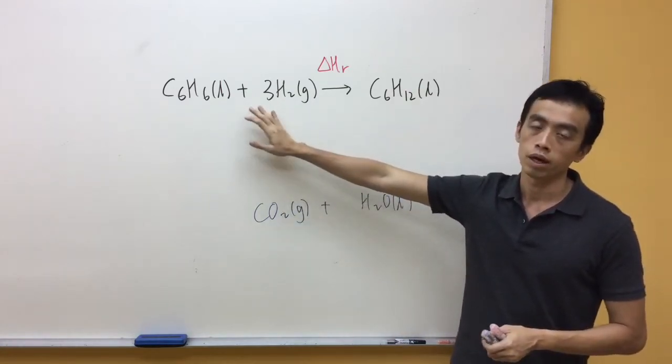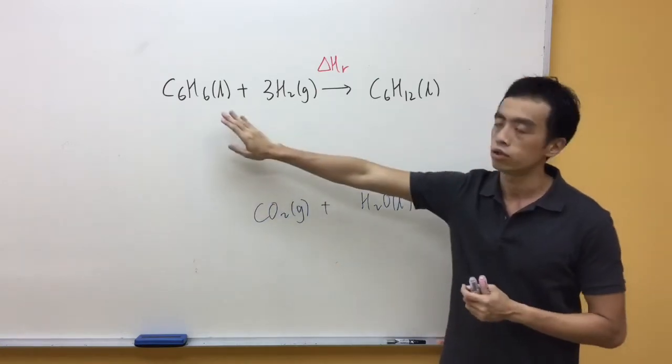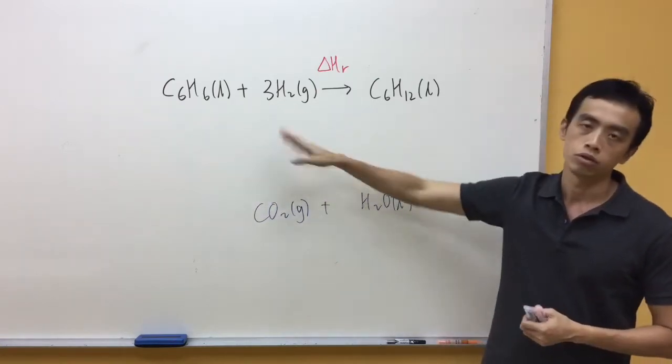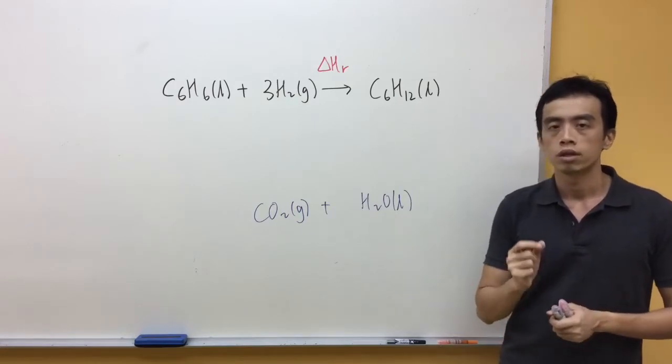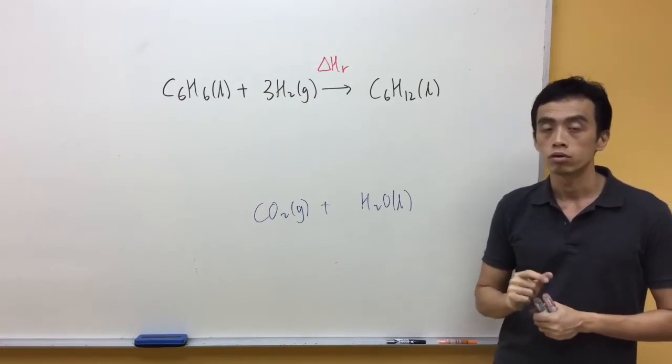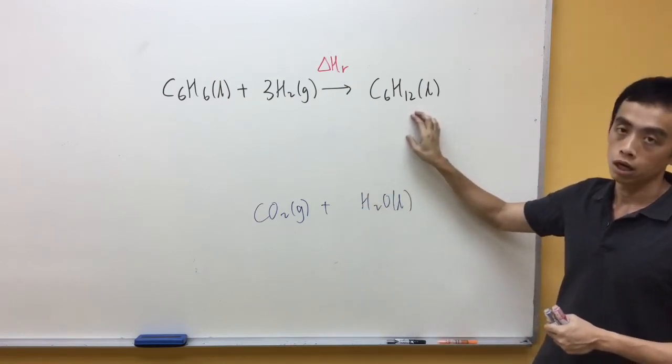If I balance the left-hand side, actually what I need to do is I need to consider two separate combustions: combustion of C6H6 as well as the combustion of hydrogen, and then I need to add the oxygen together. In general, that is a little bit more troublesome. So let us consider the combustion involving C6H12.